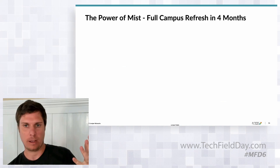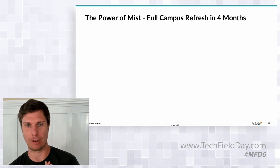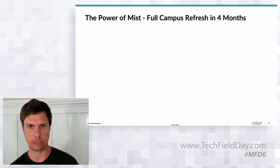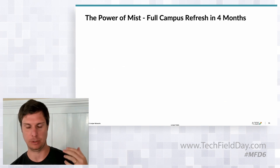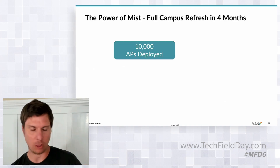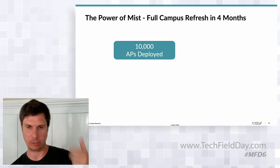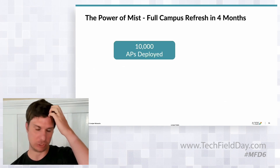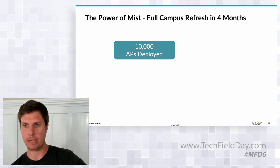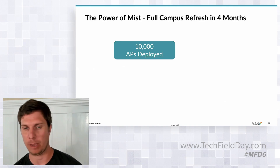We had a webinar last month on cloud and campus architectures. One customer refreshed their entire college campus in four months, replacing Cisco APs with 10,000 MIST APs. It's really all about ease of deployment — they had installers using the MIST app, taking pictures, and placing APs on the map. Tasks that used to require a network engineer were handled by the installers themselves.